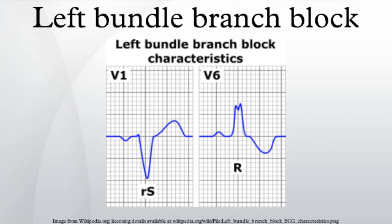Classification: There are also partial blocks of the left bundle branch — left anterior fascicular block and left posterior fascicular block. This refers to the bifurcation of the left bundle branch.